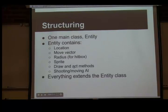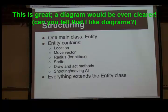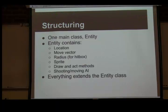For structure, we have one main class called Entity. This is really great because if we ever want to do hit detection — everything shares the same hit detection methods. Everything extends the Entity class. We have location, radius, and draw and act methods, plus a little bit of AI as well.